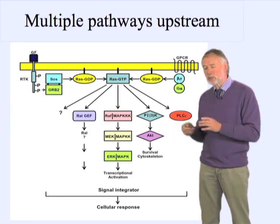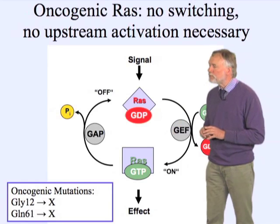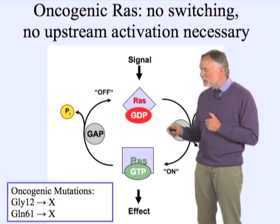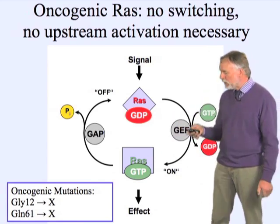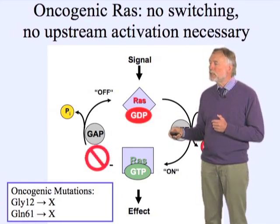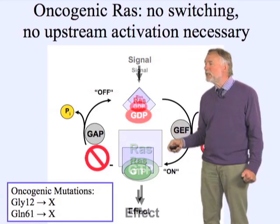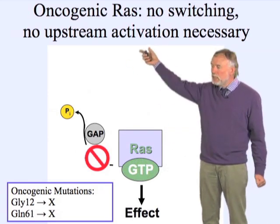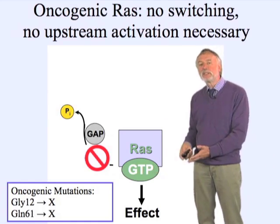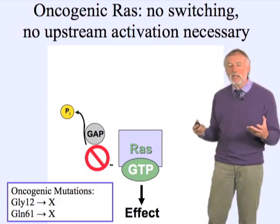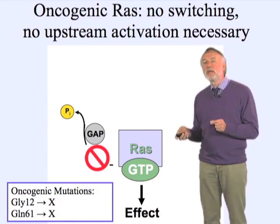I want to concentrate on the switch-off reaction. RAS is also an oncogene with two types of mutations: either glycine-12 mutated to any other amino acid, or glutamine-61 mutated to any other amino acid. Biochemically, this blocks the GAP-mediated GTPase reaction. You have blocked the return to the inactive state, so RAS accumulates in the GTP-bound form. You no longer need any upstream signaling because RAS is already constitutively active, and its effect is unregulated — that's why it leads to cancer. As a structural biochemist, this raises the very interesting question: how can a simple point mutation have such dramatic consequences?